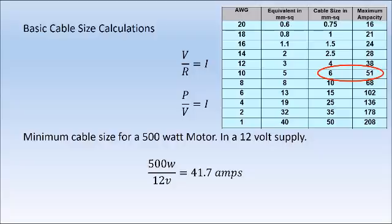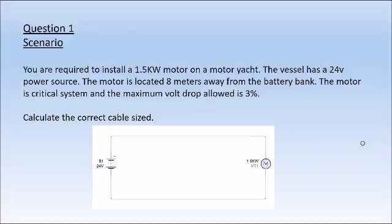So we've got a 500-watt motor, 12-volt supply, 41 amps, 6-millimeter cable. But if the cable run is 20 meters long, 30 meters long — and on larger boats probably sometimes even 50 meters long — the chances are that the 6-millimeter cable won't be sufficient to provide enough voltage to power that motor as required. So this is where we move on to the next step.